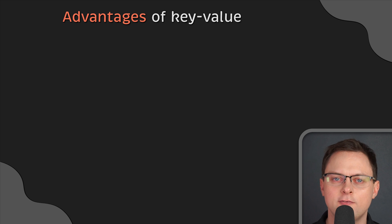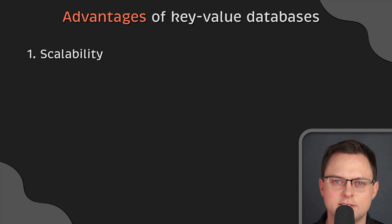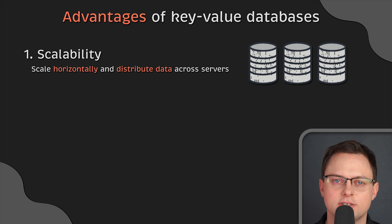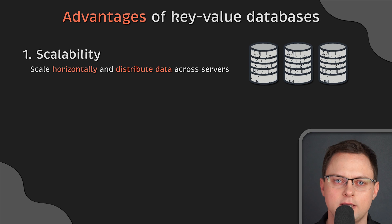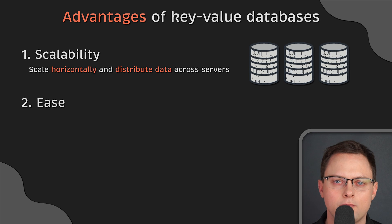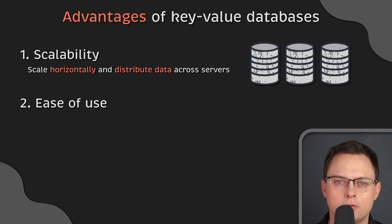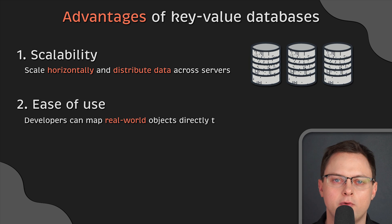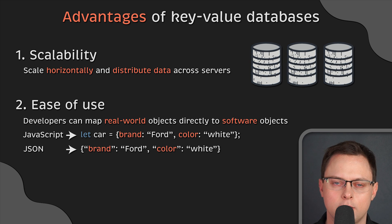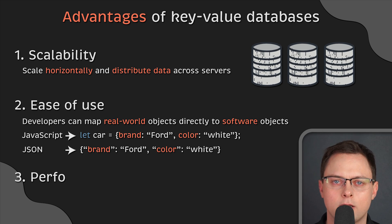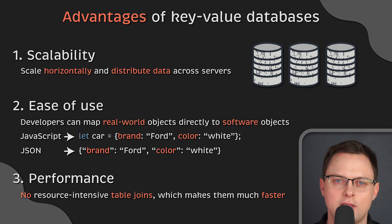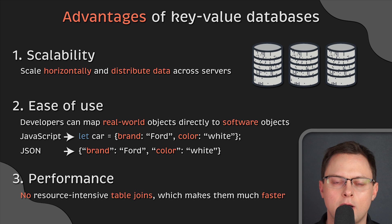There are a few advantages of key-value databases. The first is scalability — most key-value databases can scale horizontally and automatically distribute data across servers to reduce bottlenecks at a single server. Then there is ease of use — key-value databases follow the object-oriented paradigm, allowing developers to map real-world objects directly to software objects. Unlike relational databases, key-value databases don't have to perform resource-intensive table joins, which makes them much faster.